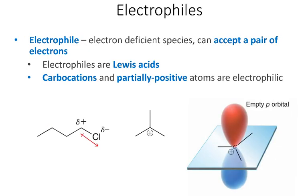With electrophiles, we're looking for exactly the opposite. Electrophiles are electron-deficient species — because they're lacking electrons, they can accept a pair of electrons, so electrophiles are Lewis acids, which are electron-pair acceptors. The things we're looking for are sort of the opposite of nucleophiles: chlorine being partially negative draws electron density away from carbon, so that carbon is going to be an electrophile. Or if we have full-on positive charges, those are definitely going to be electrophiles, whereas full-on negative charges are going to be nucleophiles.